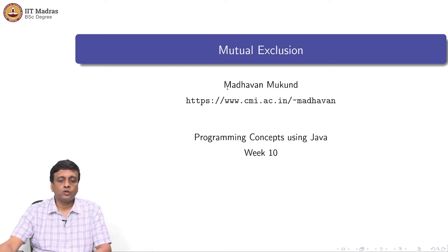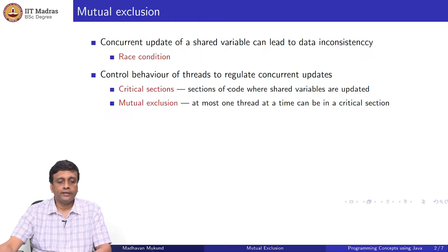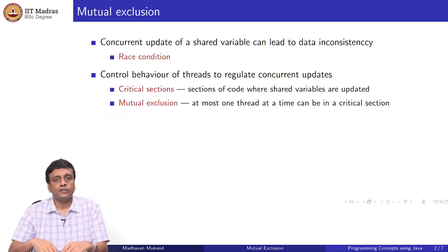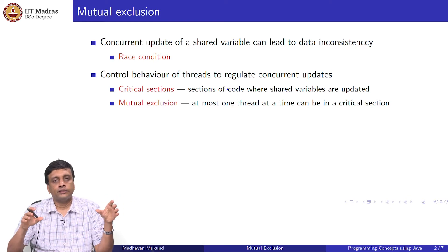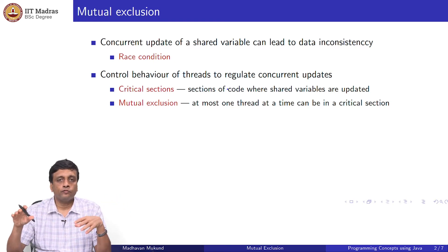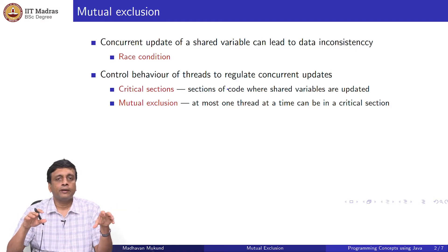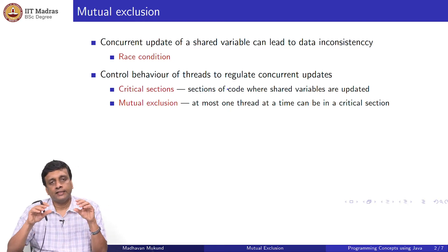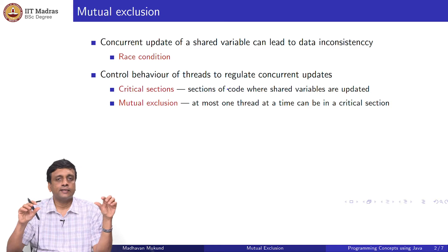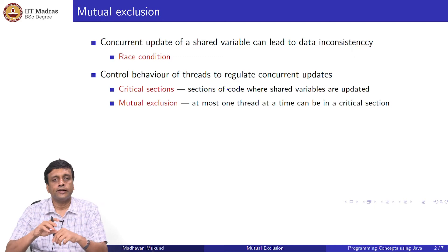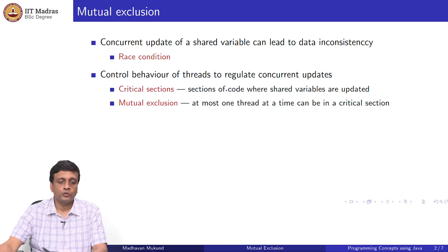We are looking at the mutual exclusion problem — the problem of ensuring that there are no race conditions when we try to concurrently update data. A race condition is one where we have data which is shared and being updated or viewed from two concurrent threads, and because of concurrent updates, we might see inconsistent values of the data. We identify critical sections where concurrent data is being manipulated and ensure mutual exclusion. So, how do we achieve this kind of mutual exclusion?